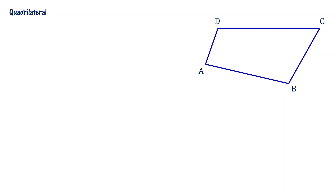Quadrilateral is a 2D plane figure. Square, rectangle, rhombus, and parallelogram are all special kinds of quadrilateral. In a general quadrilateral, opposite sides are equal and parallel. For a square, all sides are equal length. For a rectangle, opposite sides are equal length. For a rhombus, opposite sides are parallel and all sides are equal — that is its special feature.